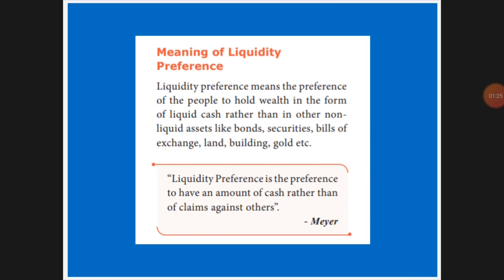If you are keeping that money for more than one year — whatever you hold in the form of wealth rather than cash liquidity — if you are keeping it as an asset, a building, or land, that is different. Instead, if you are keeping the money in your hand for day-to-day activity, that is liquidity. Liquid assets like bonds, securities, bills of exchange, land, building, and gold — if you are keeping those, that is wealth.